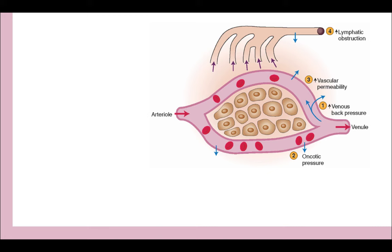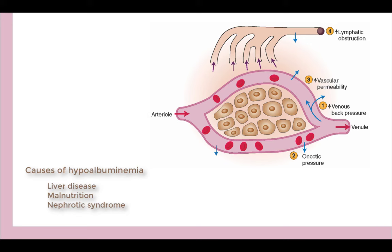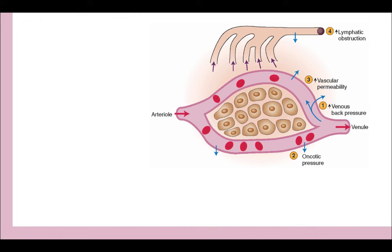Causes of hypoalbuminemia include liver disease, as discussed, as well as nephrotic syndrome, in which protein is lost in the urine, and malnutrition. Finally, the last cause of edema illustrated in the diagram is lymphatic obstruction, which may be due to parasitic infection such as filariasis.